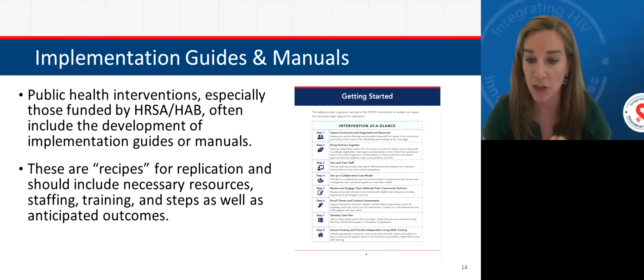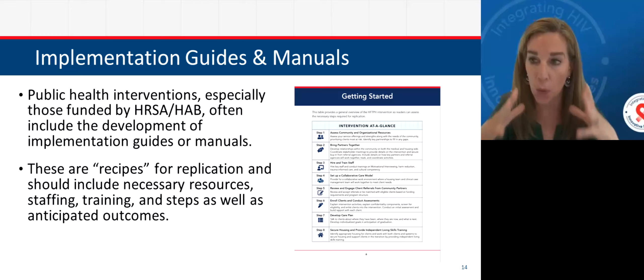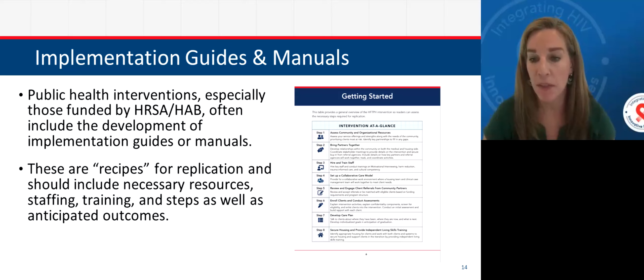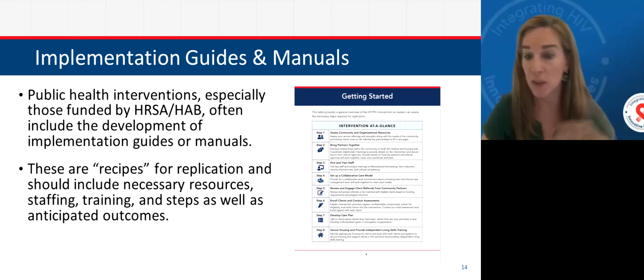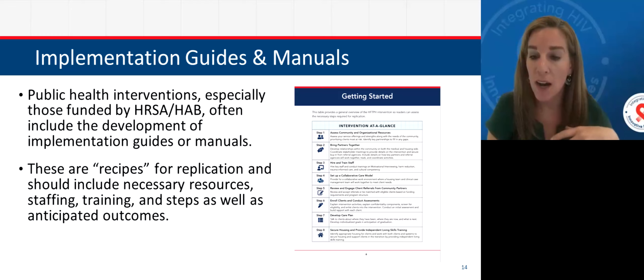The at-a-glance table is something organizations find helpful early on when assessing whether an intervention is the right fit and getting a quick look at what's involved. It implements short sentences, hierarchy with headings and body copy, numbering so it's clear this is a stepwise process, and iconography to reinforce visual information. It lets audiences know early on if this is the right fit for them.